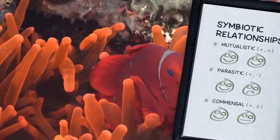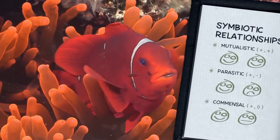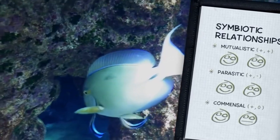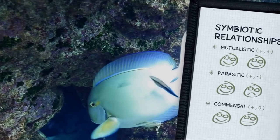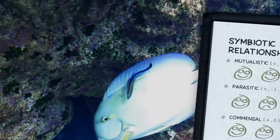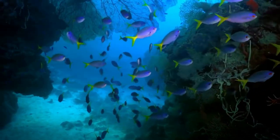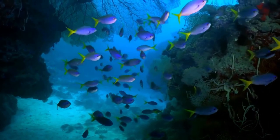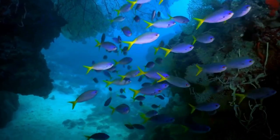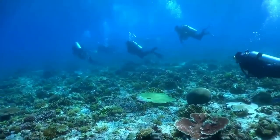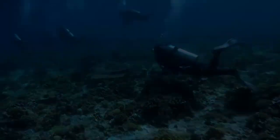On a coral reef, species interactions and the various symbiotic relationships that arise from them are fundamental to the functioning of the entire ecosystem. Understanding these interactions allows us to predict patterns of diversity and, most importantly, come to a better understanding of these biologically rich cities under the sea.